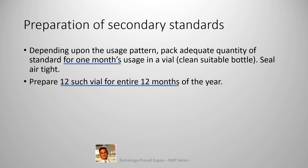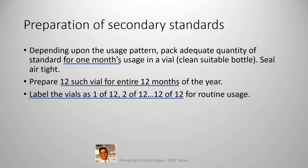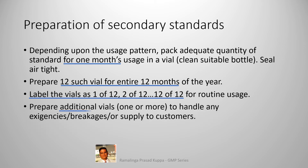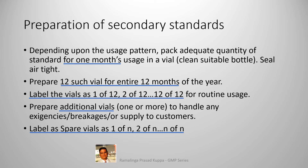Prepare 12 such vials for the entire 12 months of the year — one vial per month is the strategy. This protects the standard from any potential accidental contamination. Label the vials as 1 of 12, 2 of 12, and so on up to 12 of 12 for routine usage, with each vial specifically assigned to one particular month. Prepare additional spare vials to handle any exigencies, breakages, or supply to customers, labeled as 1 of N, 2 of N, and N of N.